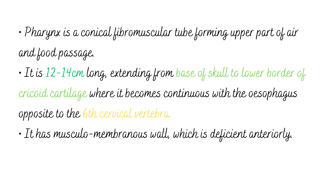Pharynx is a conical fibromuscular tube forming the upper part of the air and food passage. It is 12 to 14 cm long, extending from the base of the skull to the lower border of the cricoid cartilage, where it becomes continuous with the esophagus, opposite the 6th cervical vertebra. It has a musculomembranous wall which is deficient anteriorly.